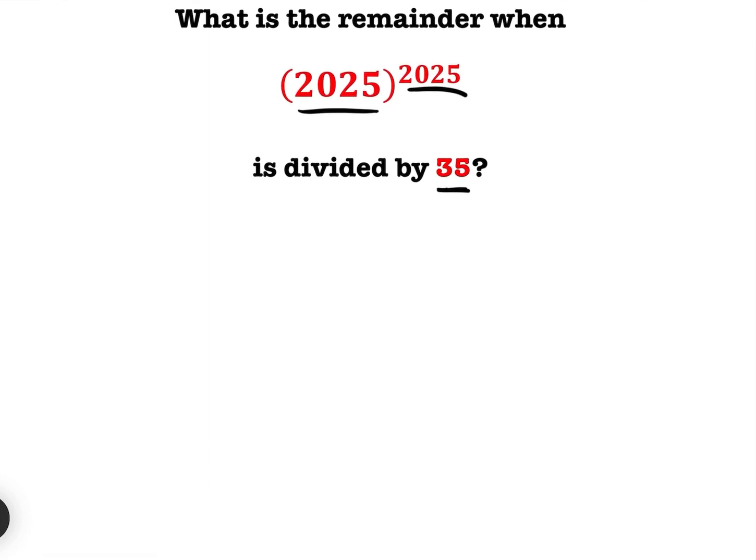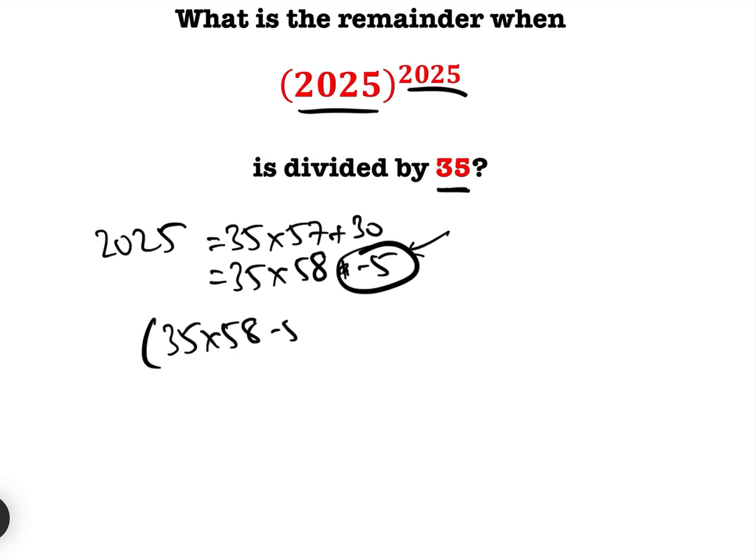Method one is using the binomial expansion. So the idea is to get as much as we possibly can as a multiple of 35 and then see what's left. So 2025, we clearly want to put it as either 35 times 57 add 30, or 35 times 58 minus 5. Well I tend to prefer having the smaller number here, so we can rewrite 2025 as 35 times 58 minus 5 to the power of 2025.